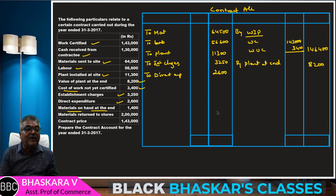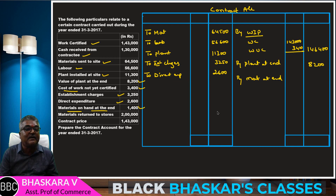Materials on hand at the end — on the credit side, materials at end: 1,400.